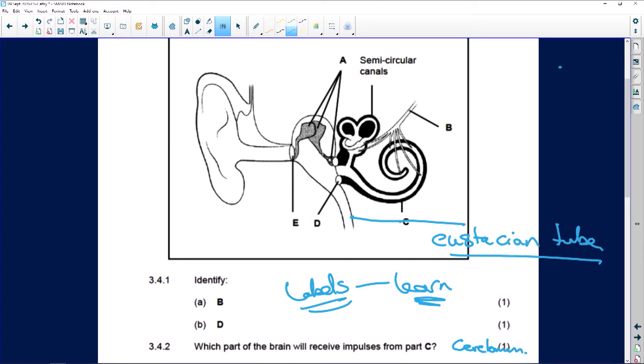And this eustachian tube makes sure that you've got air here and you've got air here, and that air is equal. That it's balanced - the pressure, equal pressure.